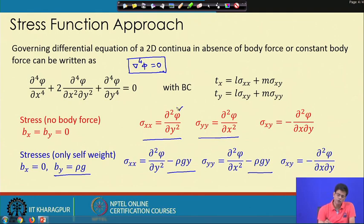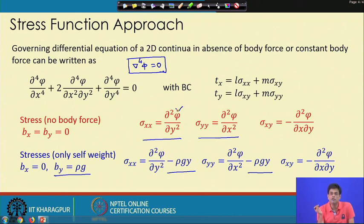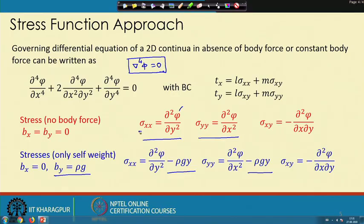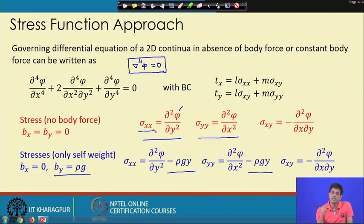An important feature of the biharmonic equation is that if φ is found properly, there is no need to invoke material constants. The stresses become independent of material properties.